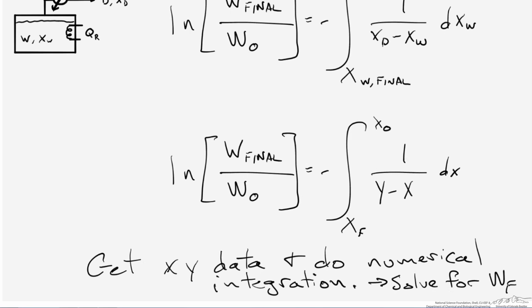Now that we have the vapor-liquid equilibrium data, all that's left is to execute the numerical integration on the right-hand side. There are several options with varying degrees of accuracy. Popular choices include Simpson's rule, which fits the data to a curve and solves for the area under the curve; the trapezoidal rule, which fits the data as a series of trapezoids and sums those up; and the right-hand rule, which fits the data to a series of rectangles and sums those up to determine the area under the curve. While the right-hand rule has the highest error, we're going to use it here for simplicity. Our general approach is to find a value for dx divided by (y minus x) and then sum up those values to determine the overall integral.